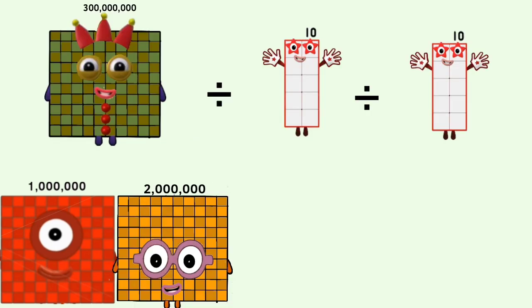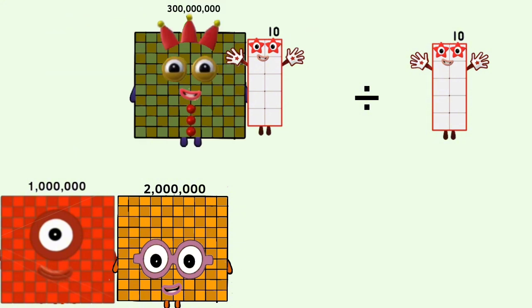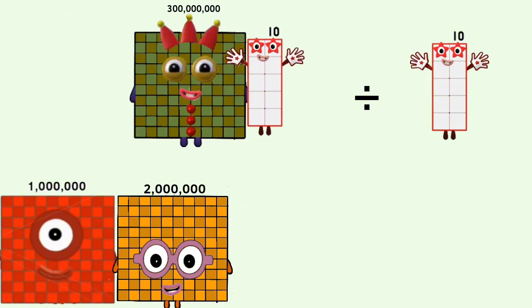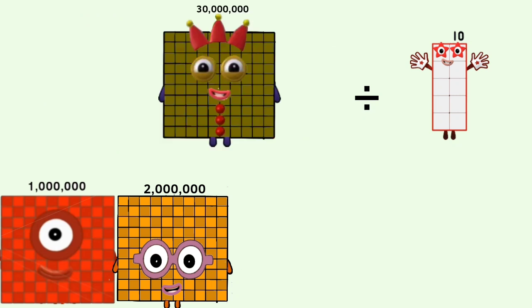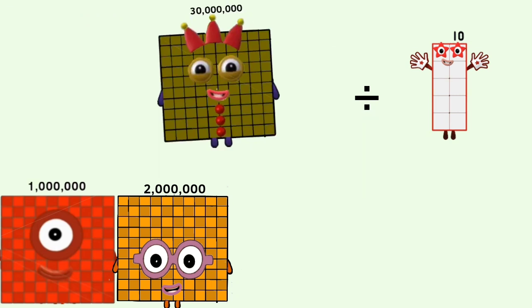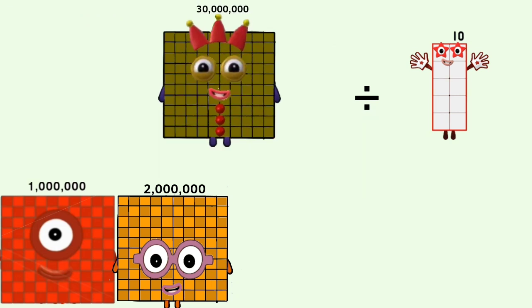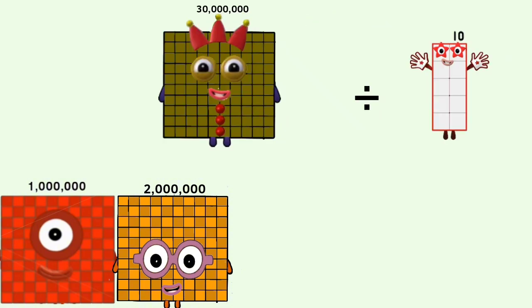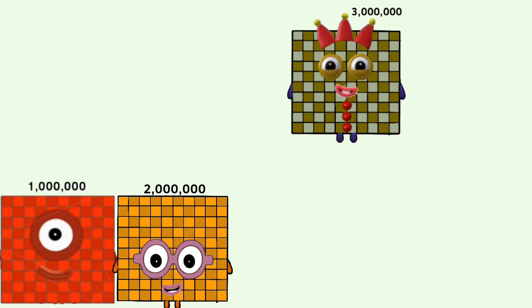300,000,000 divided by 10 equals 30,000,000. 30,000,000 divided by 10 equals 3,000,000.